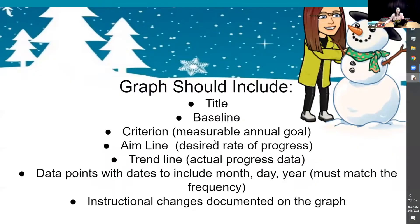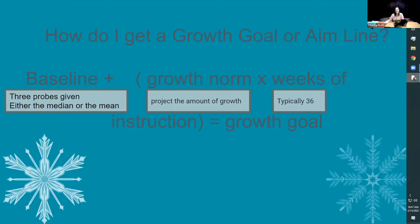Let's talk about how to get the growth goal or aim line. You must give three baseline probes and look at either the median or the mean of those three. Which is better for determining that child's exact baseline point? Remember that any single assessment is one point in time — consider what was going on with that student. Did they have a bad morning in the cafeteria? Are they feeling well? Have they missed several days of school? All of those things can affect performance.